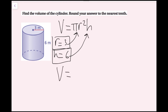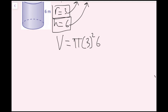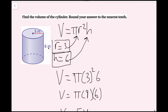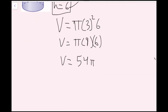Now I'm going to plug these values into the formula: V equals pi times three squared times six. Three squared is nine, so this is pi times nine times six. Nine times six is 54, so my volume is going to be 54 pi. My units for radius and height are in meters, so since I'm dealing with volume, the answer is 54 pi cubic meters.